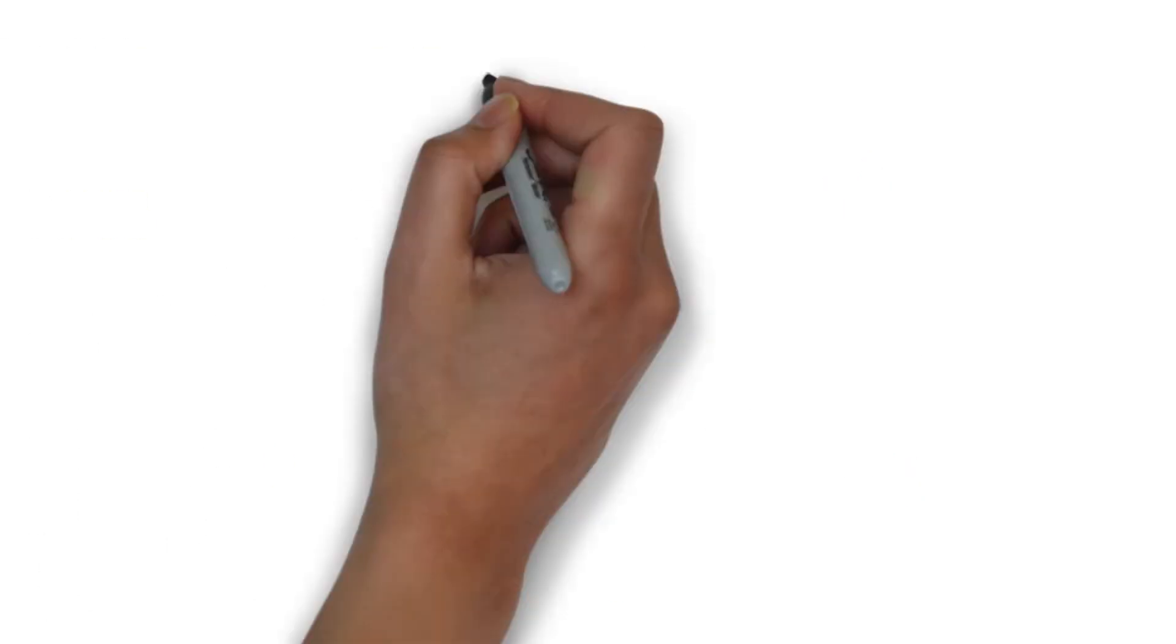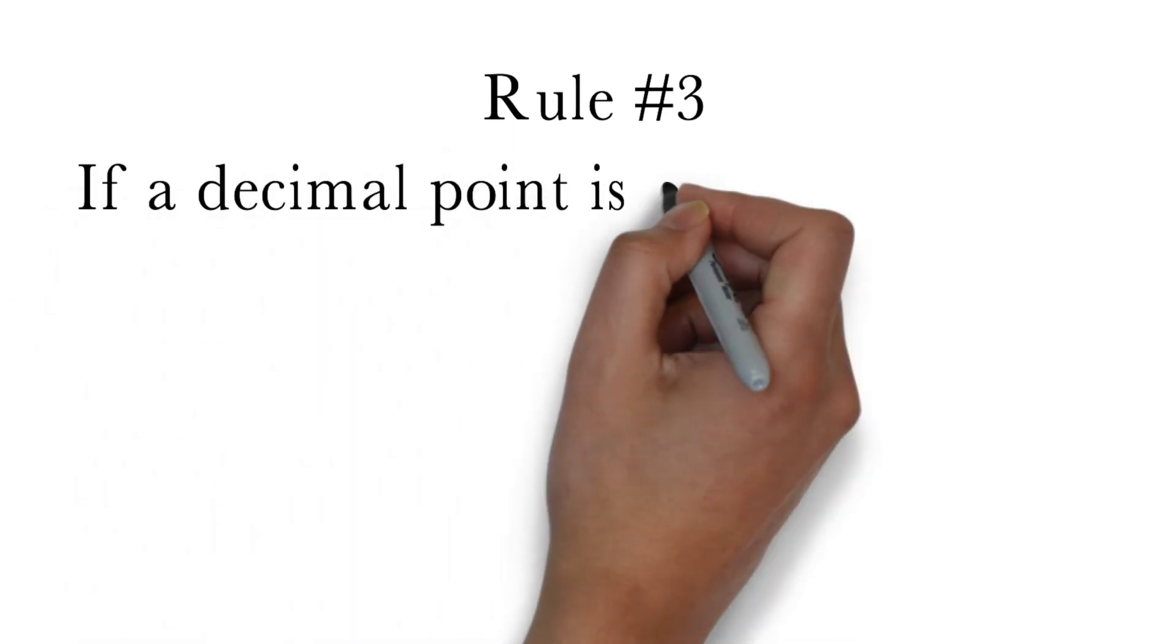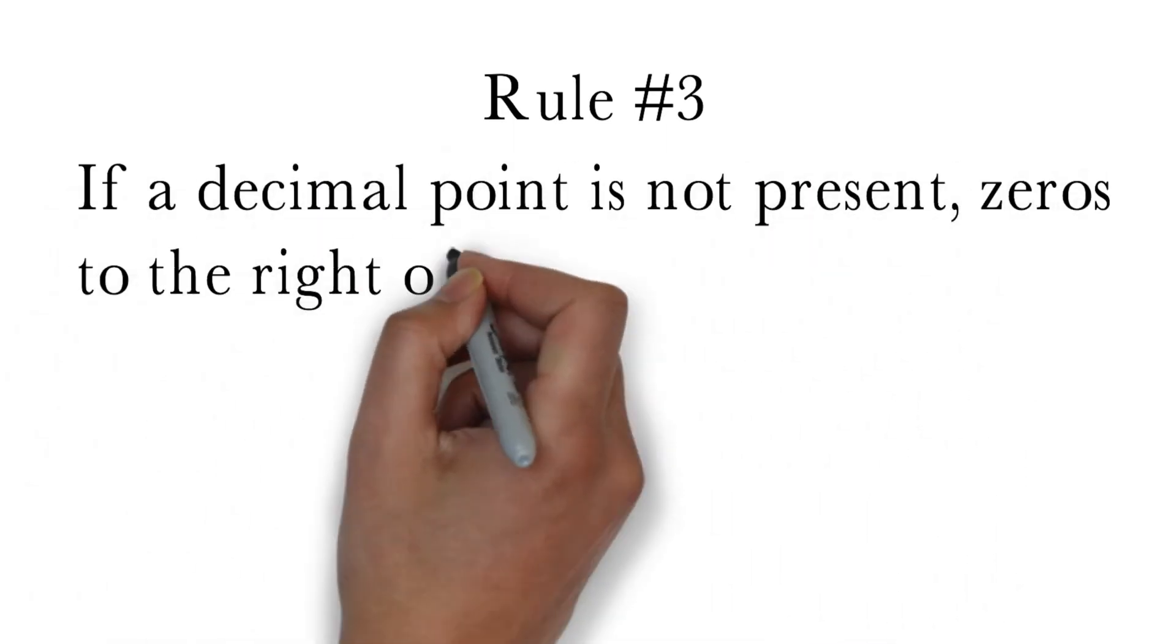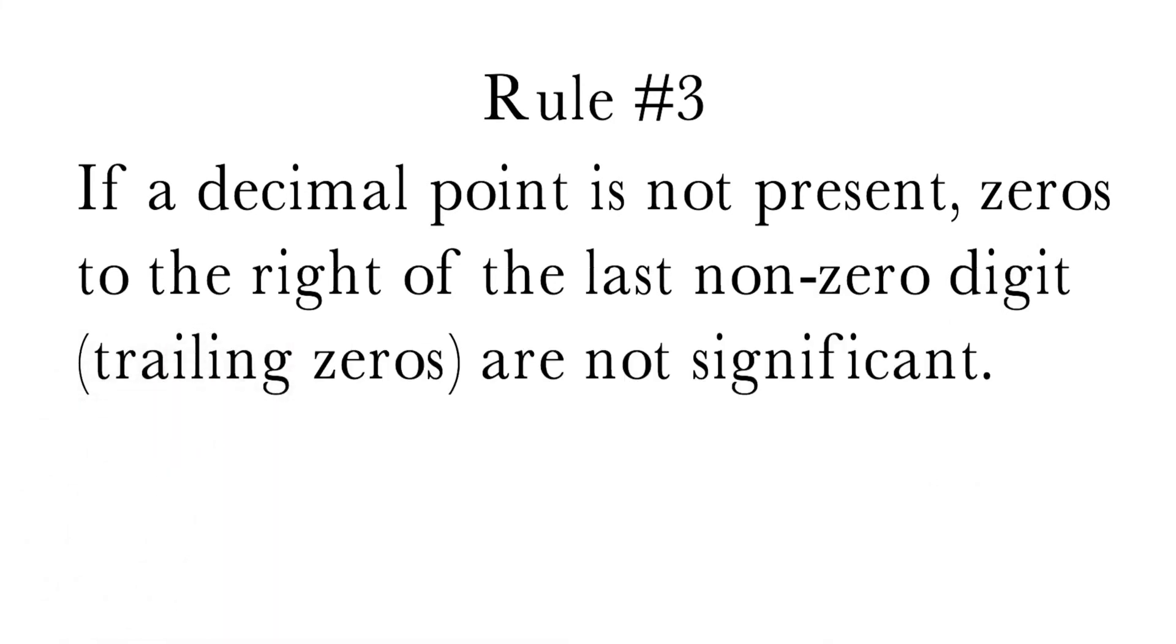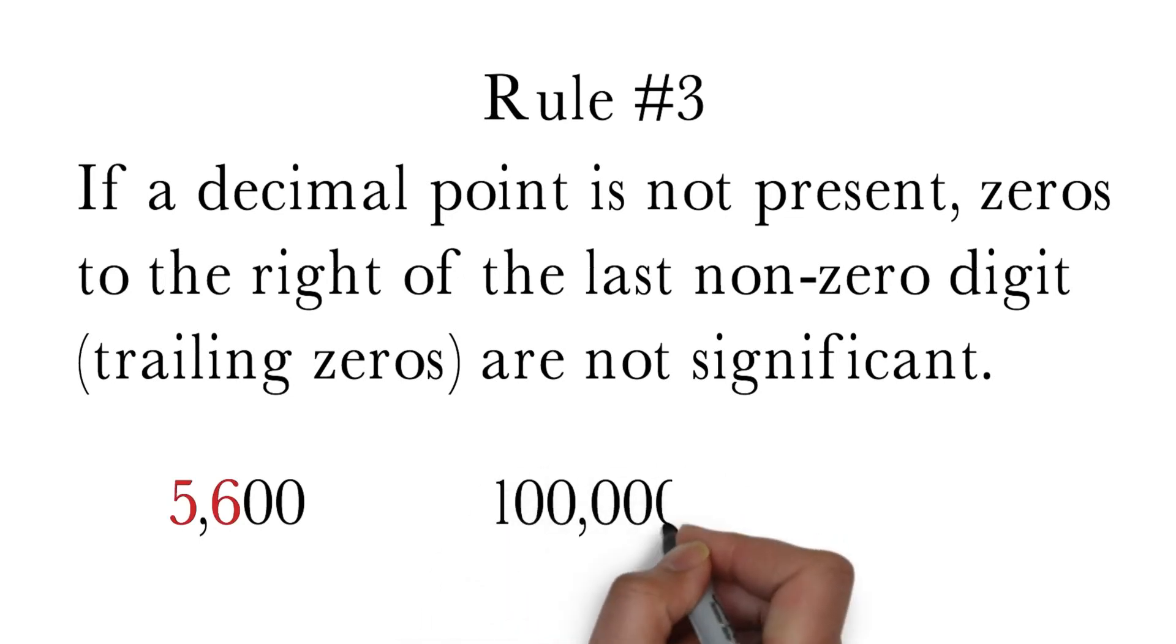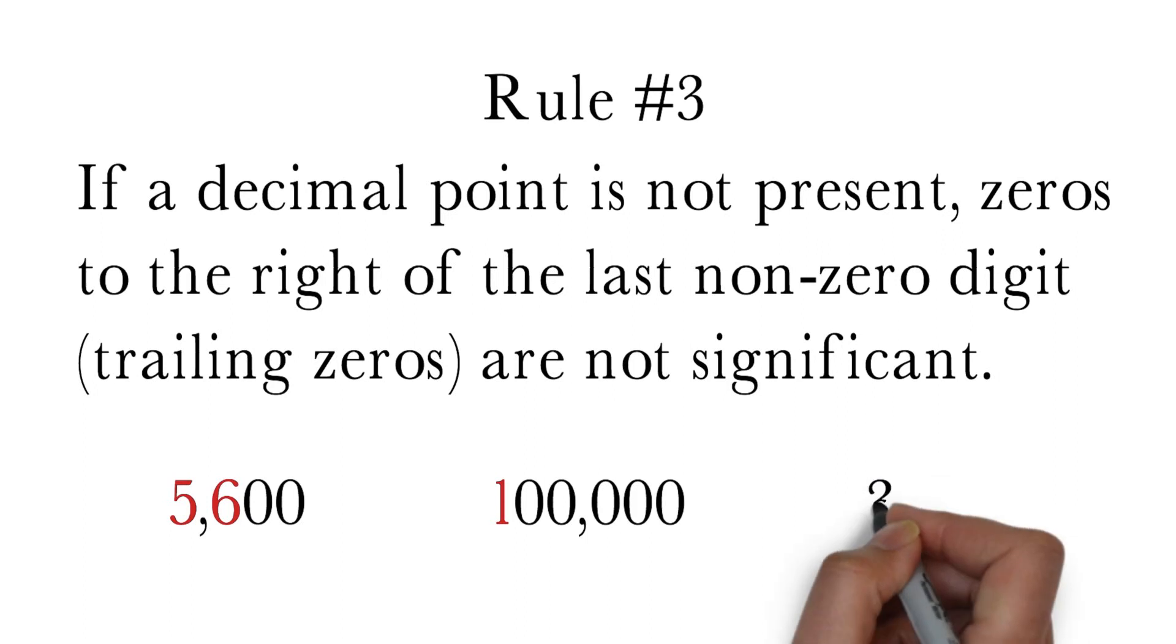The third rule of significant digits is if a decimal point is not present, zeros to the right of the last non-zero digit, also known as trailing zeros, are not significant. For example, 5600 has two significant digits, 100,000 has one significant digit, and 3240 has three significant digits.